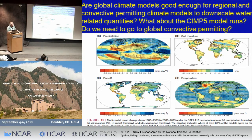A related question is that global models all use convective parameterizations. If we're getting intensity and frequency wrong, are they proper boundary conditions for downscaled regional models? The bottom-line question in my mind is: do we need to go to global convective permitting modeling?